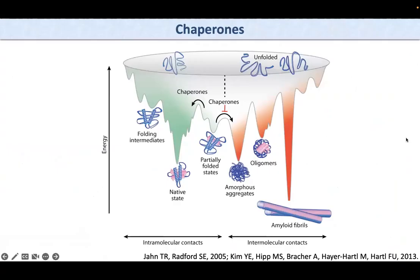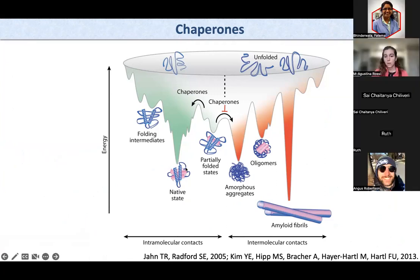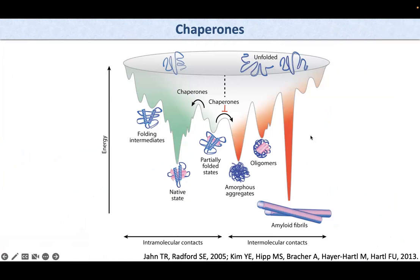As we all know, molecular chaperones are proteins that help other proteins adopt their native state. They also prevent the formation of amorphous aggregates, oligomers, and amyloid fibers that develop from unfolded protein states.